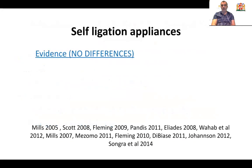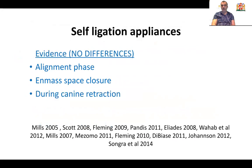What about self-ligation? There are several randomized controlled trials mainly undertaken in the UK, Australia, and America. They found there is no evidence to support that self-ligation is faster than conventional ligation during alignment phase, during space closure, or during canine retraction. Overall, treatment duration is actually 3 months longer than conventional ligation, as shown by the randomized controlled trial undertaken in Syria by the Hajir team.